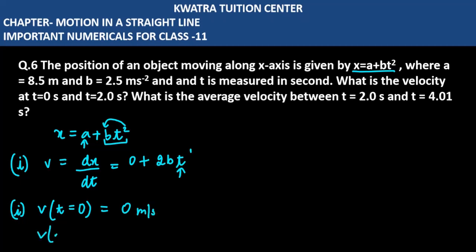At t equals 2, if you place the value here, it will be 2 into b into 2, that is 4b meter per second. The b value is 2.5, so 4 into 2.5 equals 10 meter per second.